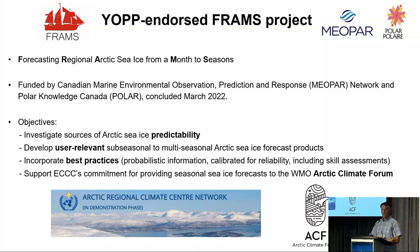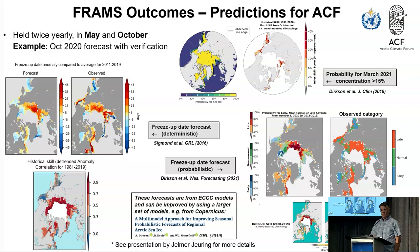This brings me to a YOP endorsed project that came out of a targeted funding call by MEOPAR and Polar Knowledge Canada - a project called Forecasting Regional Arctic Sea Ice from Months to a Season (FRAIMS) that we were involved in. It aimed to investigate sources of Arctic sea ice predictability on slightly longer time scales and develop user-relevant forecast products. This was also part of the Arctic Climate Forum, which was quite useful for user engagement. Particular efforts included looking at freeze-up date in a deterministic and probabilistic sense, looking at different probabilities of ice, and the potential benefits of a multi-model approach. There's a presentation tomorrow on the Arctic Climate Forum for more information.